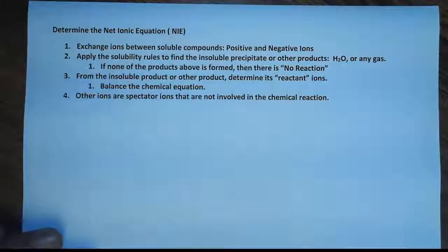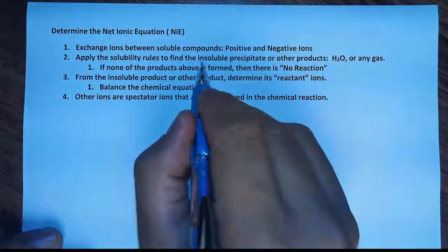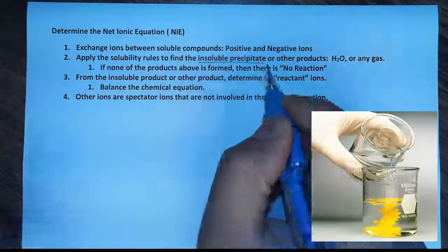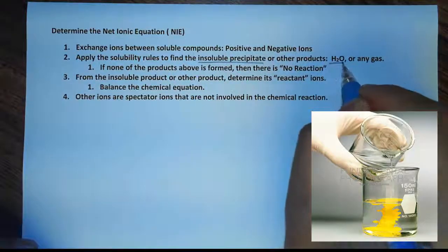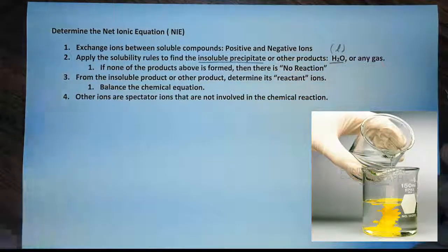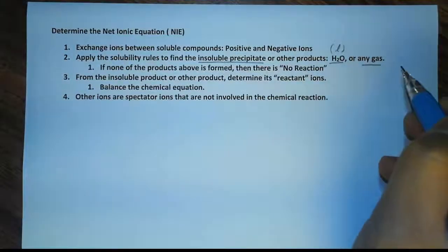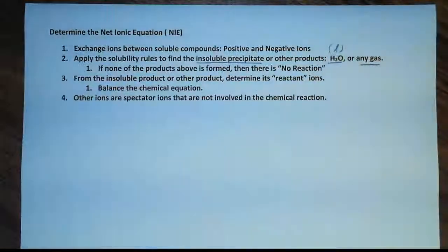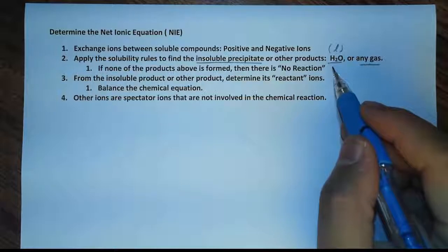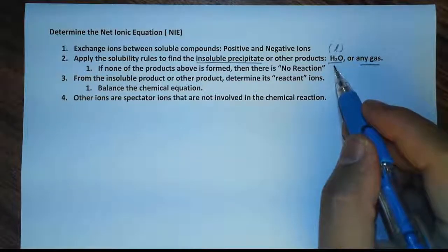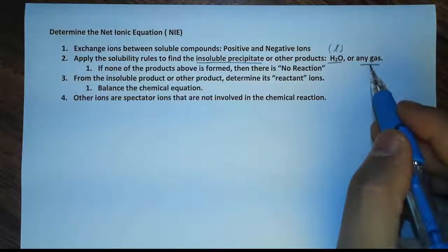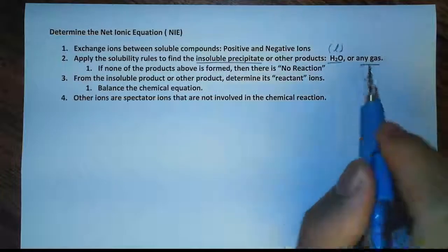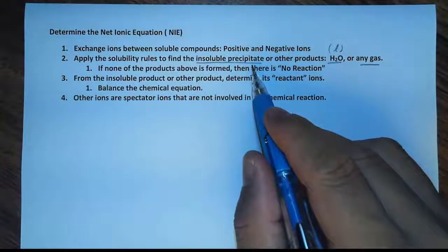We need to form one of the following products. One product is going to be the insoluble precipitate, which is a solid. Or the other product is going to be liquid H₂O, which is water. Or we can have a formation of gas, because if you produce gas, it is going to escape from the solution. When we produce water, the hydrogen bonds will keep the water molecules together. When we produce gas, it escapes from the solution, and a solid precipitate remains a solid.